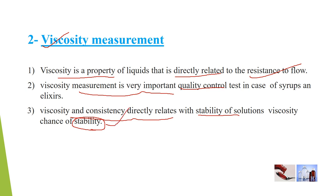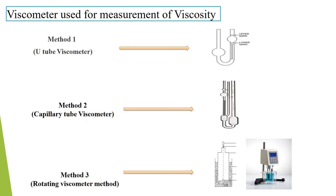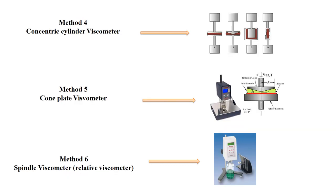For viscosity measurement, many viscometers are available. These include: Ubbelohde (U-tube) viscometer, capillary tube viscometer, rotating viscometer, concentric cylindrical viscometer, cone plate viscometer, and spindle viscometer. These are the viscometers by which you can measure the viscosity of elixirs.